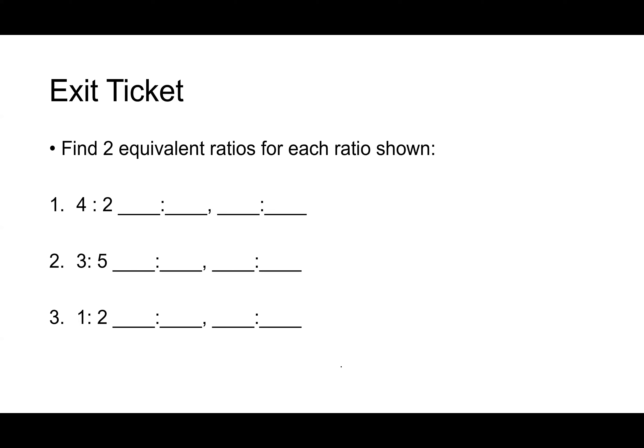Find two equivalent ratios — you can multiply or divide both terms by anything. For four to two, the most obvious equivalent ratio is two to one. What's another? Eight to four. Great job.